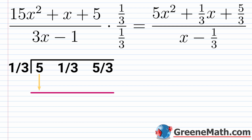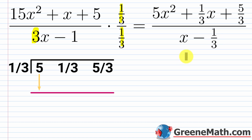What could we do? We want this coefficient of x to the first power to be 1. So to get rid of that 3, we can divide by 3, or multiply by 1 third. To legally do this with a fraction, we multiply numerator and denominator by 1 third — since 1 third over 1 third is 1, we're not changing the value. So the numerator becomes 5x squared plus 1/3 x plus 5/3, and the denominator becomes x minus 1/3. Now it's of the form x minus k.